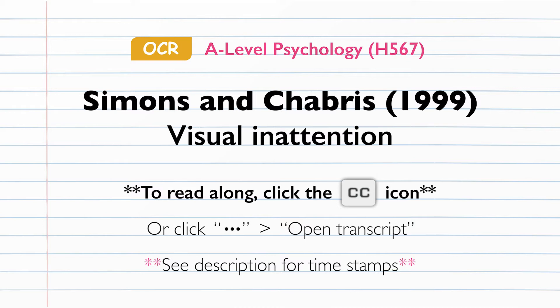The researchers had several aims that they wanted to investigate in the study in relation to inattentional blindness. First, to investigate whether the difficulty of the task that participants were required to focus on would have an effect on inattentional blindness. Second, whether the visual similarity of the unexpected object in relation to the attended object would have an effect on inattentional blindness. And third, whether a superimposed version of the scene would have a different effect compared to a live version of the scene in relation to inattentional blindness.